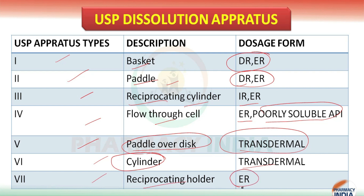The seventh one is the Reciprocating Holder, used for extended release. Students, please try to note down and memorize these, as questions are asked every year from this topic. That is all for this video — thanks for watching.